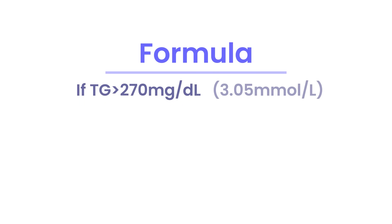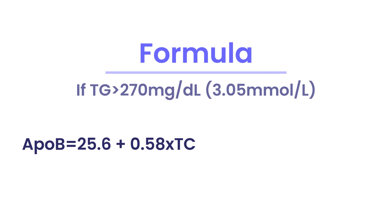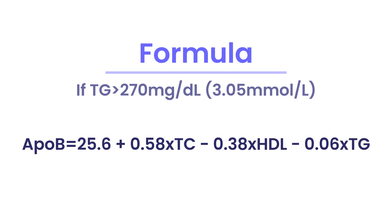There is one little caveat: if your triglycerides are very high — over 270 milligrams per deciliter — then you're better off using this slightly changed formula: 25.6, plus 0.58 times your total cholesterol, minus 0.38 times your HDL cholesterol, minus 0.06 times your triglycerides.